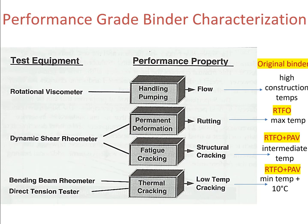These tests include the rotational viscometer test, dynamic shear rheometer test, bending beam rheometer test, and direct tension test. The rotational viscometer test is performed to measure the viscosity of the asphalt binder to ensure that they are sufficiently fluid for mixing and pumping. This test is performed at a high construction temperature of 275 degrees Fahrenheit, and is performed on an original binder, so the specimen does not have to go through any aging process in the lab.